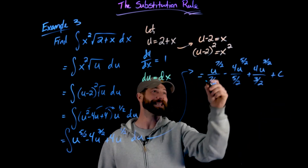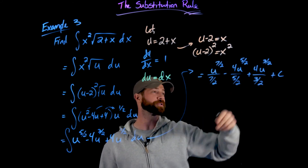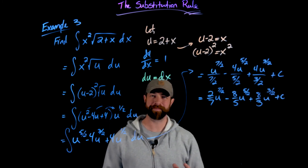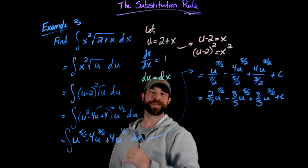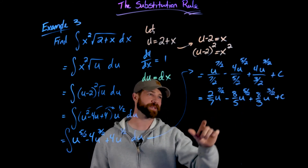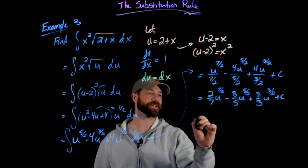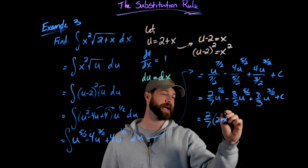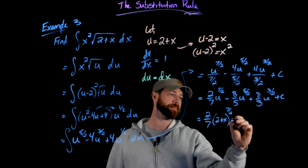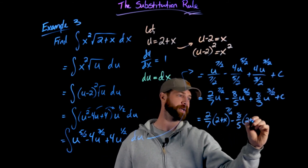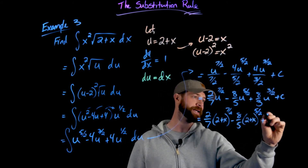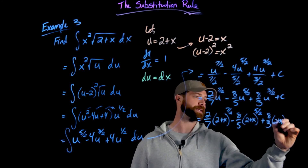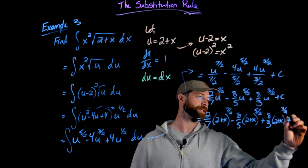I'll clean this up by multiplying by the reciprocal for each of those fractional denominators. Then, as always, since the original integral was in terms of x, I replace u with 2 plus x in each term. The final answer becomes two-sevenths times 2 plus x to the seven-halves, minus eight-fifths times 2 plus x to the five-halves, plus eight-thirds times 2 plus x to the three-halves, plus c.